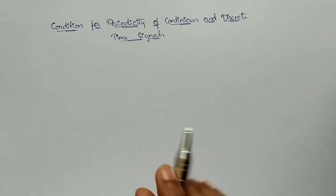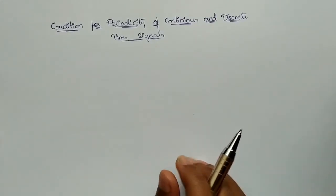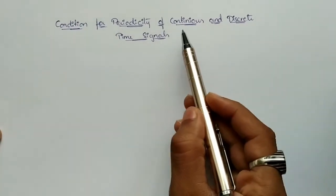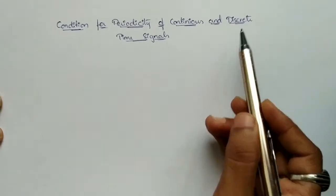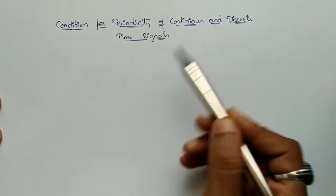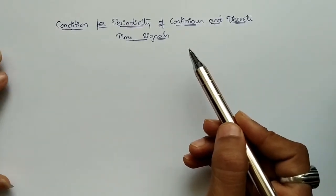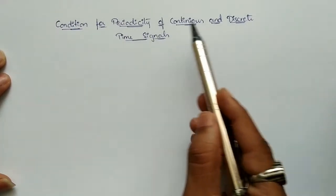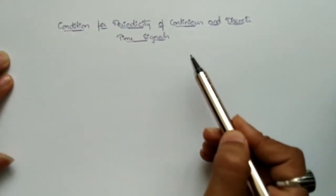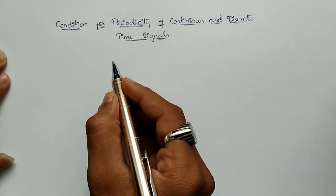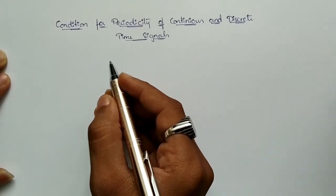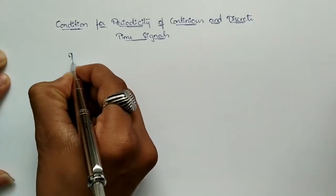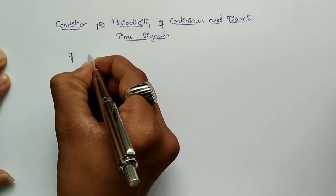Hello everyone. In this video we are going to discuss the condition for periodicity of a signal with respect to both continuous and discrete time. What is the condition for periodicity of a continuous time signal and what is the condition for periodicity of a discrete time signal?